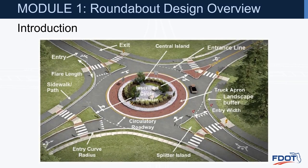This graphic provides the basic geometric features and key dimensions of a roundabout. They include entries and exits, splitter islands which separate the entries and exits, the inscribed circle diameter or ICD which includes the circulatory roadway, truck apron, and raised central island, and sidewalks or paths which are separated from the back of curb with a landscape buffer.